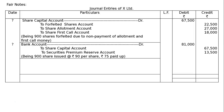Next entry: these shares are reissued at Rs. 90 per share, Rs. 75 paid up. Bank account debited: 900 into 90 = Rs. 81,000, being amount collected on reissuance. To share capital account — this is the called up or paid up value. It was reissued at Rs. 90, but paid up or called up is Rs. 75. We assumed that on this share, Rs. 75 has been paid up or called up.